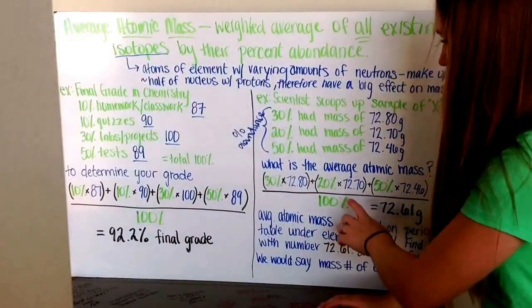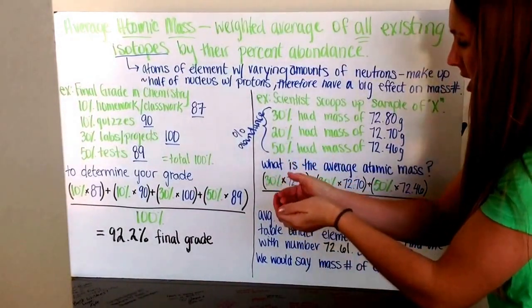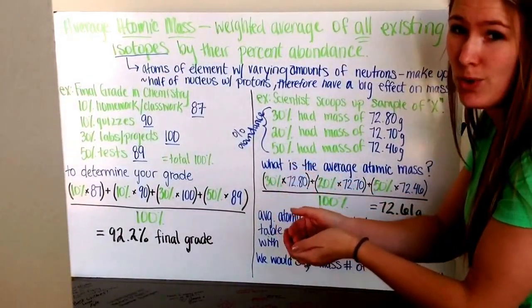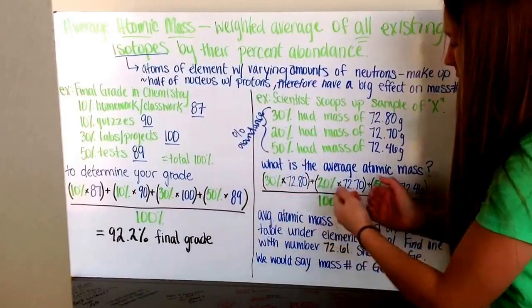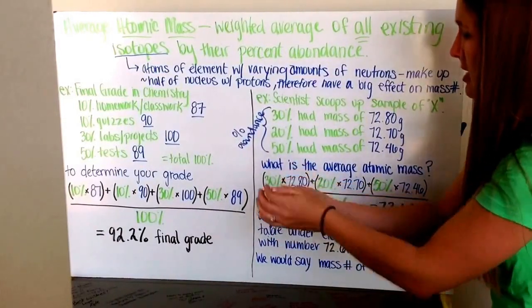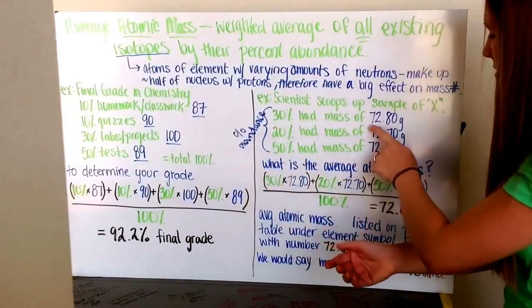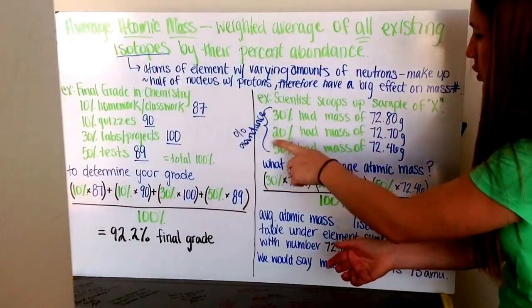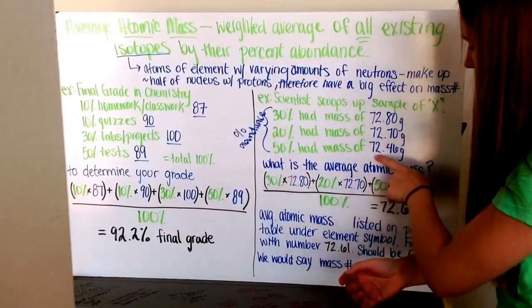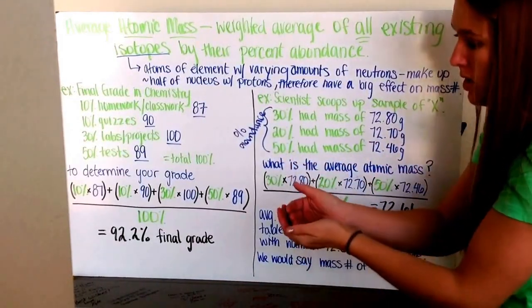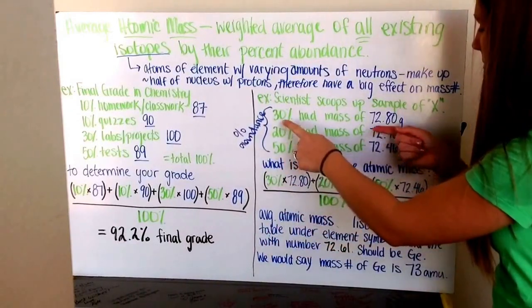Another way to think about it: instead of percents, imagine you have 100 pieces. Of those 100 pieces, 30 have a mass of 72.8 grams, 20 have a mass of 72.7 grams, and 50 have a mass of 72.46 grams.